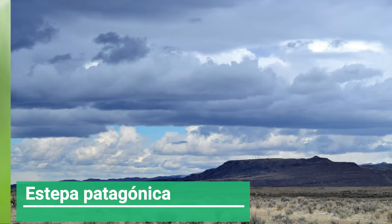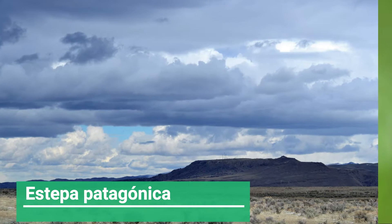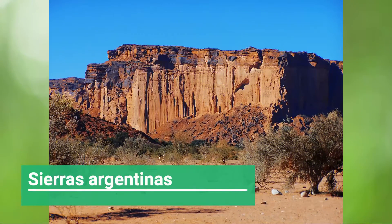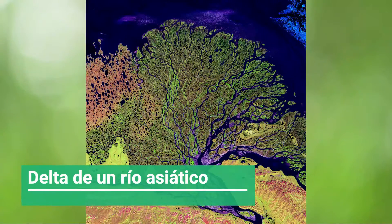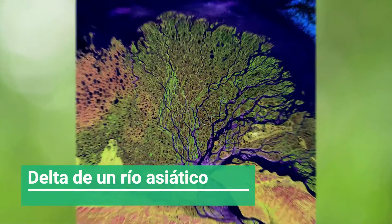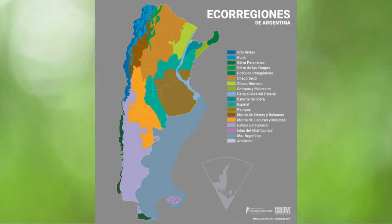La Argentina se encuentra dividida en 18 ecoregiones, de las cuales 15 corresponden al área continental y las otras 3 a las islas del Atlántico Sur, a la Antártida Argentina y al Mar Argentino. Estas 18 ecoregiones son: Los Altos Andes, la Antártida, los bosques patagónicos, campos y malesales, chaco húmedo, chaco seco, delta e islas del Paraná, espinal, estepa patagónica, esteros del Iberá, islas del Atlántico Sur, Mar Argentino, monte de llanuras y mesetas, monte de sierras y bolsones, pampa, puna, selva paranaense y las yungas.